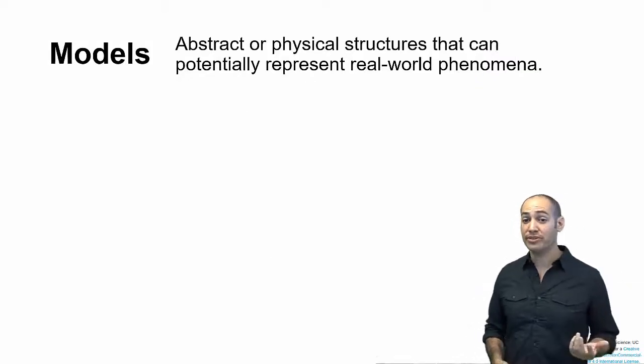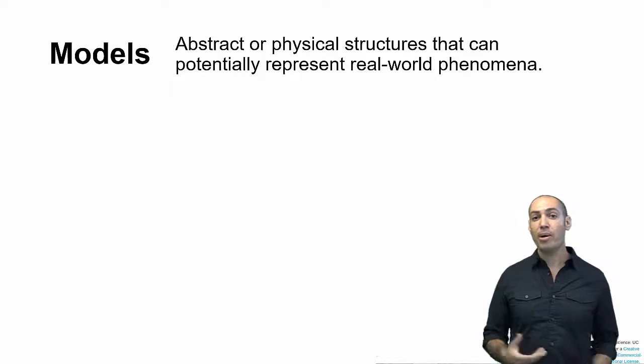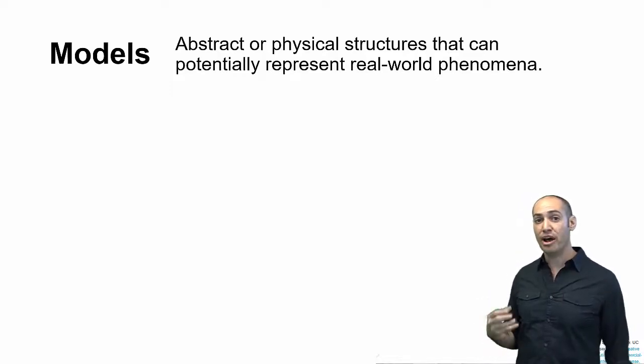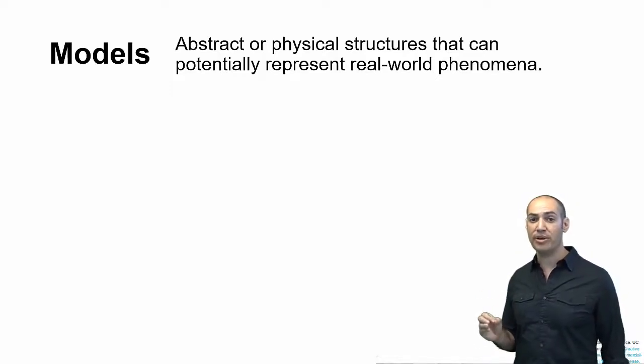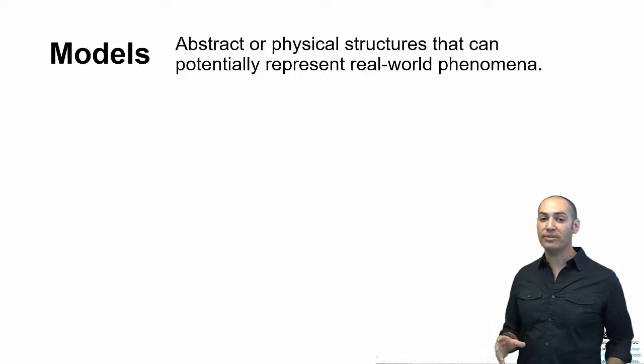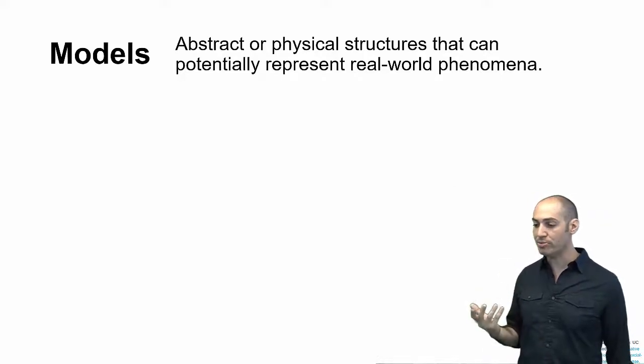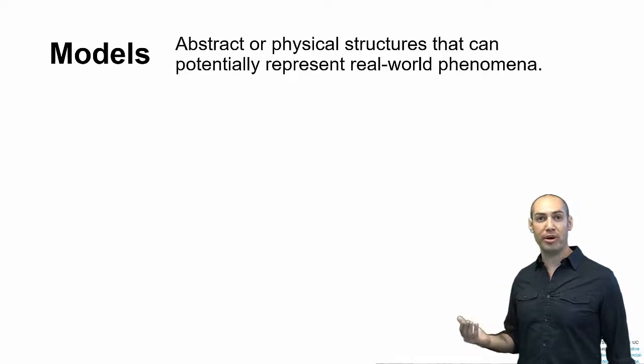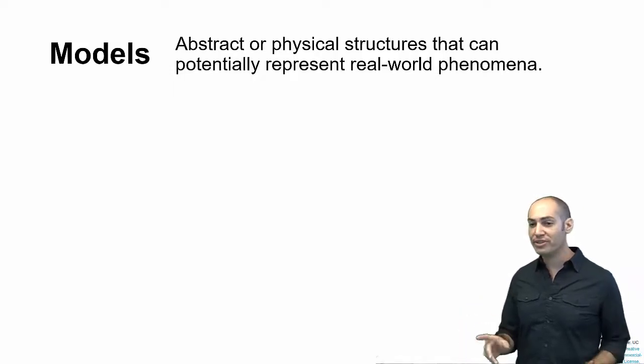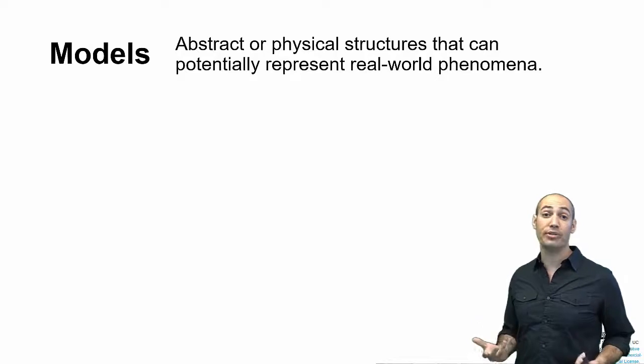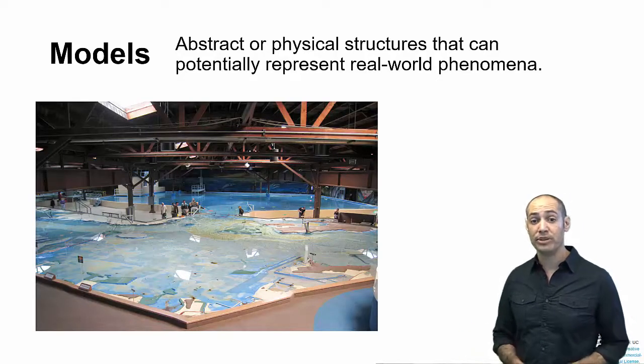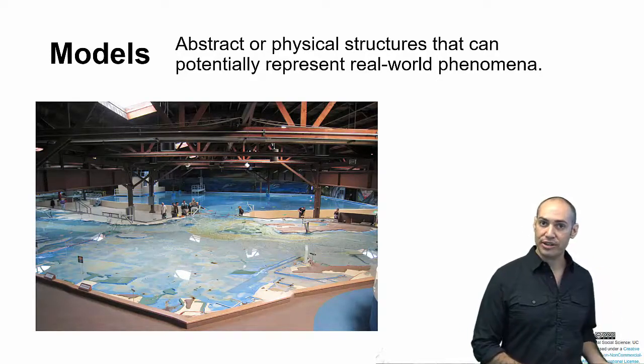So this brings us to models. One way that we come up and test explanations of complex systems is using models. A model is any abstract or physical structure that can potentially represent some real-world phenomena. I want to talk a little bit more about what models are and give you some examples.